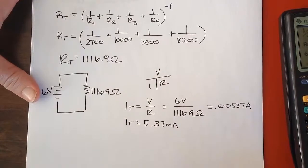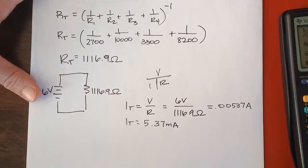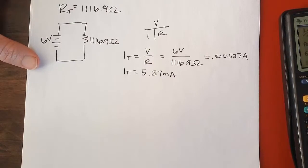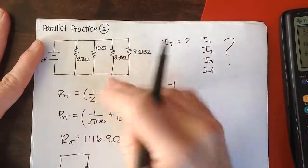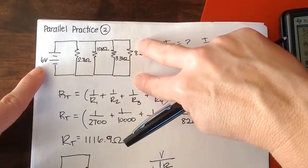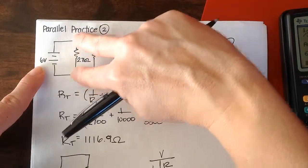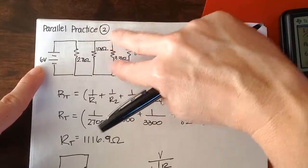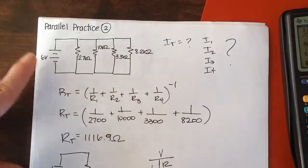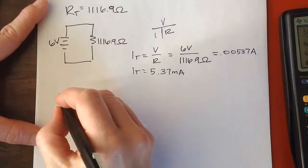Now, if we want to go back and think about what's the current in each one of those branches, we know that the potential across each branch is the potential of the source, 6 volts. Here the potential difference is 6 volts, here it's 6 volts, here it's 6 volts, here it's 6 volts. And for each one of those branches, I know the resistance. So I can find the current using the same rearrangement of Ohm's Law.